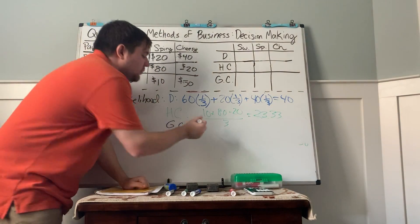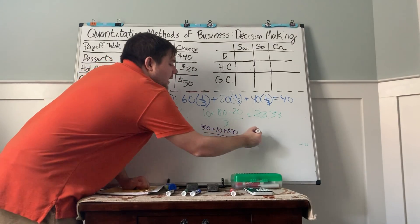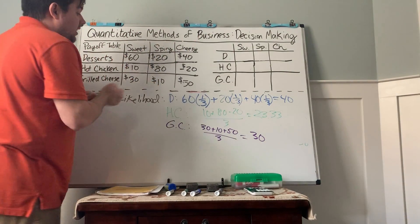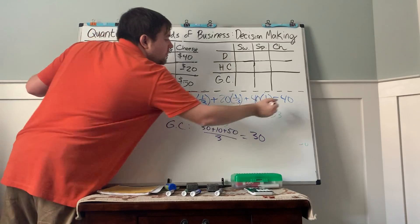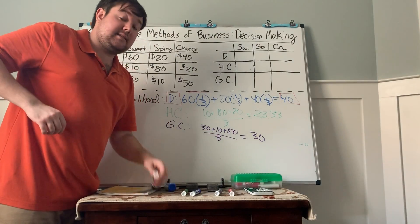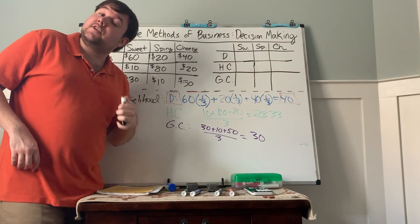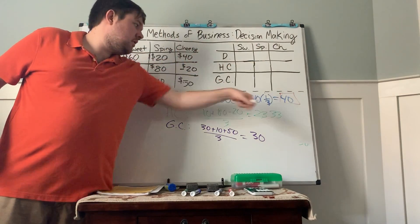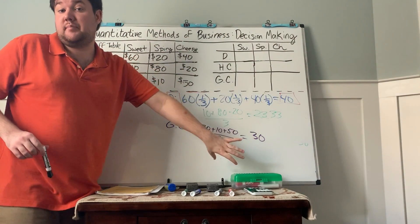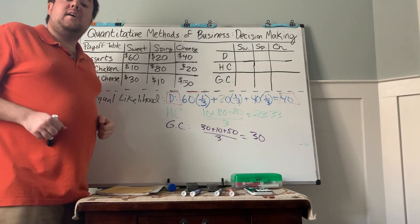And that's going to do the same thing with the grilled cheese. And in this case, we got 30 plus 10 plus 50 divided by 3. And that gives us 30. And again, we're looking at the best of these, which does happen to be the desserts at 40. Again, this is not saying that we are going to get $40,000 from undertaking this business venture. It is saying, on average, we're going to make $40,000.